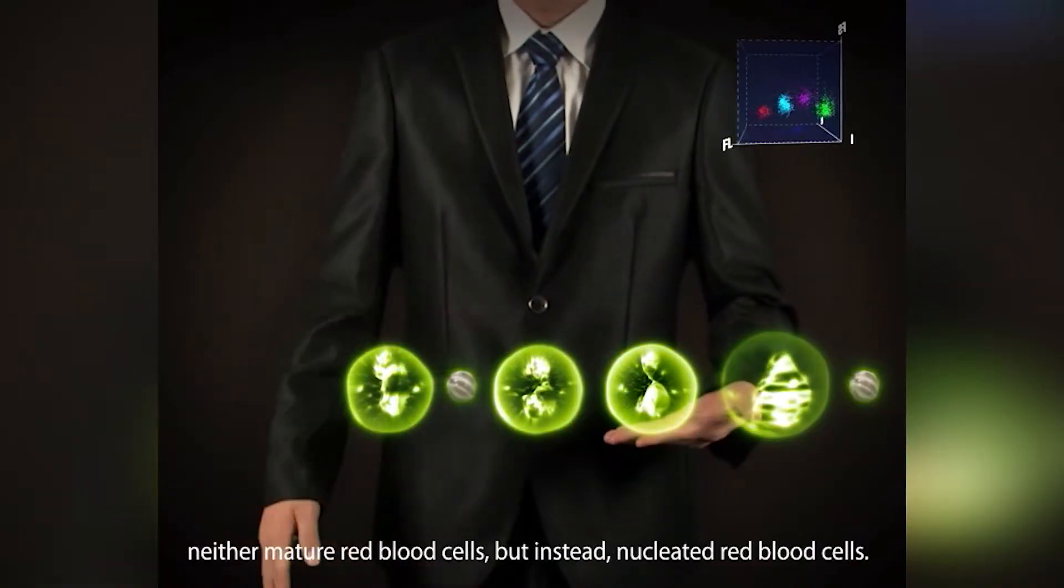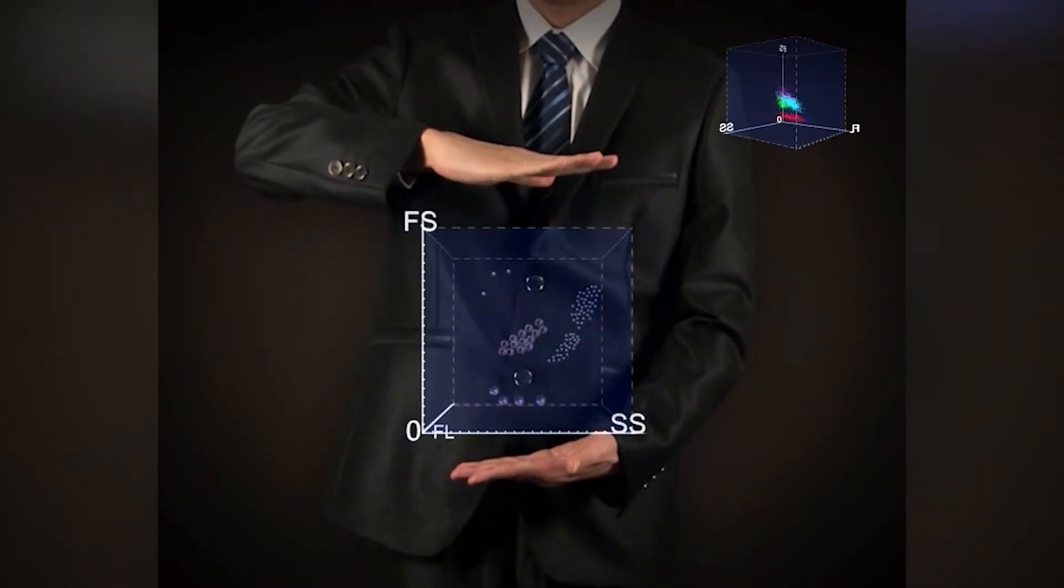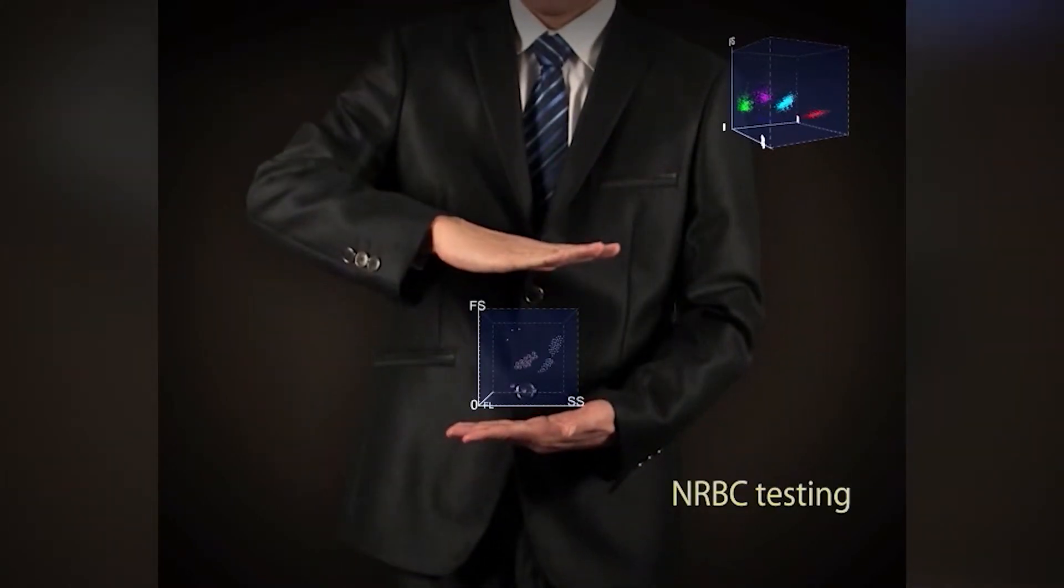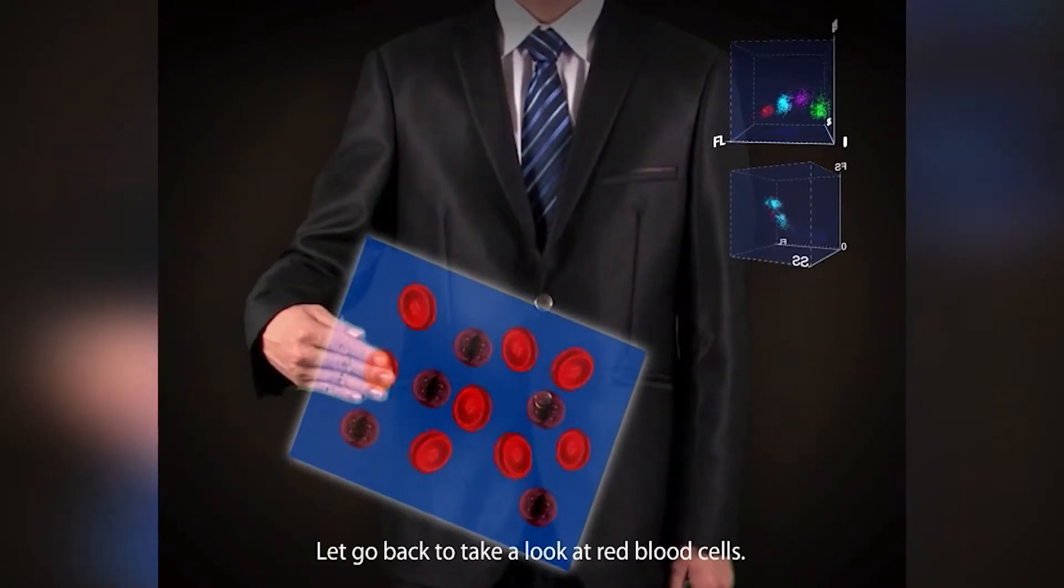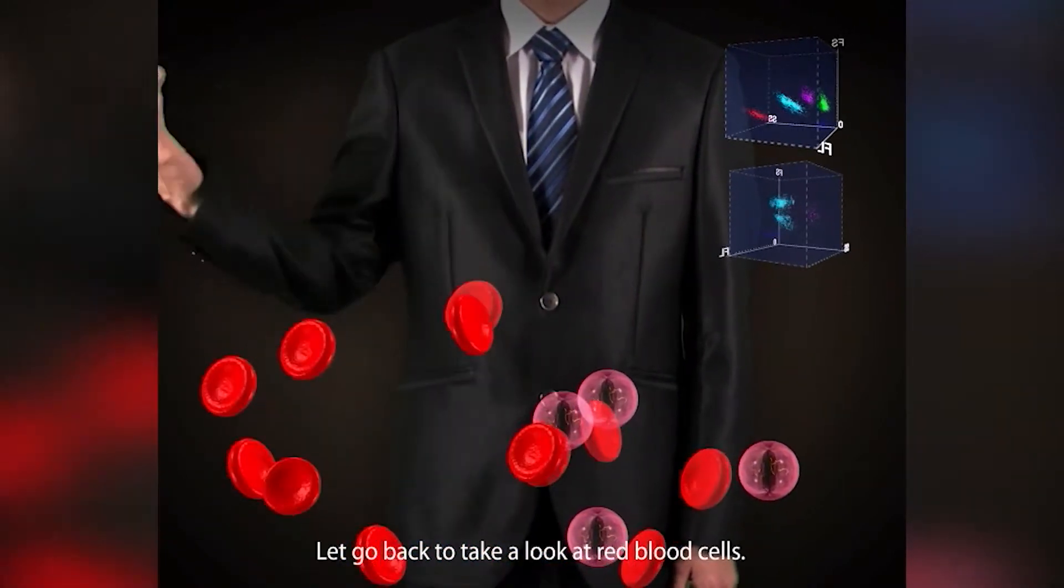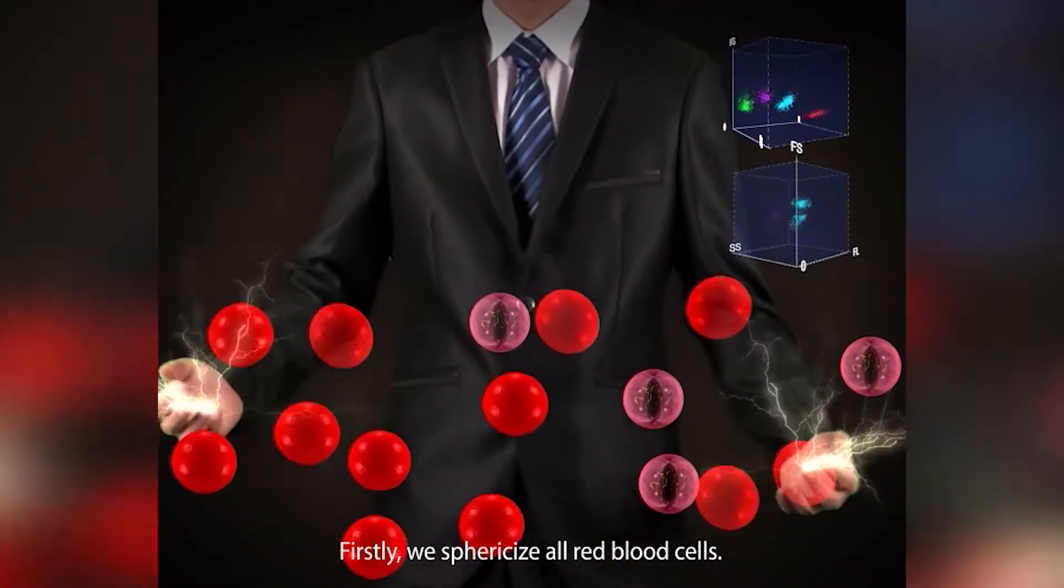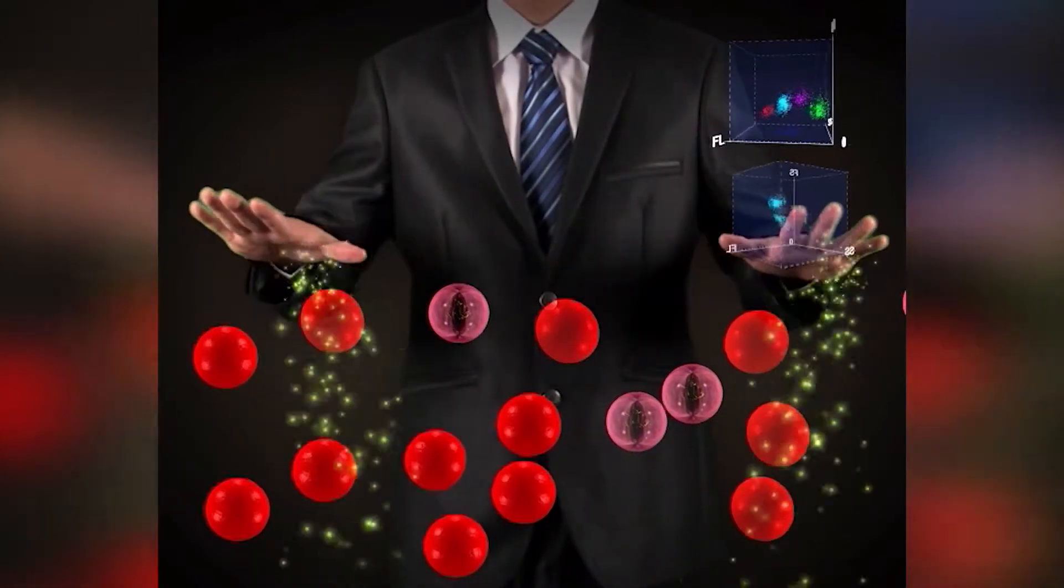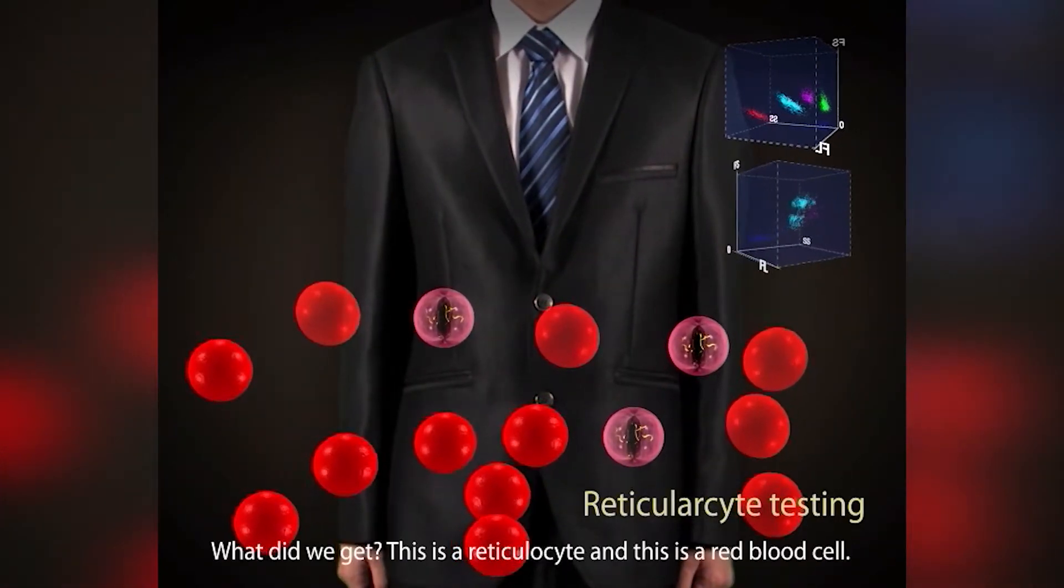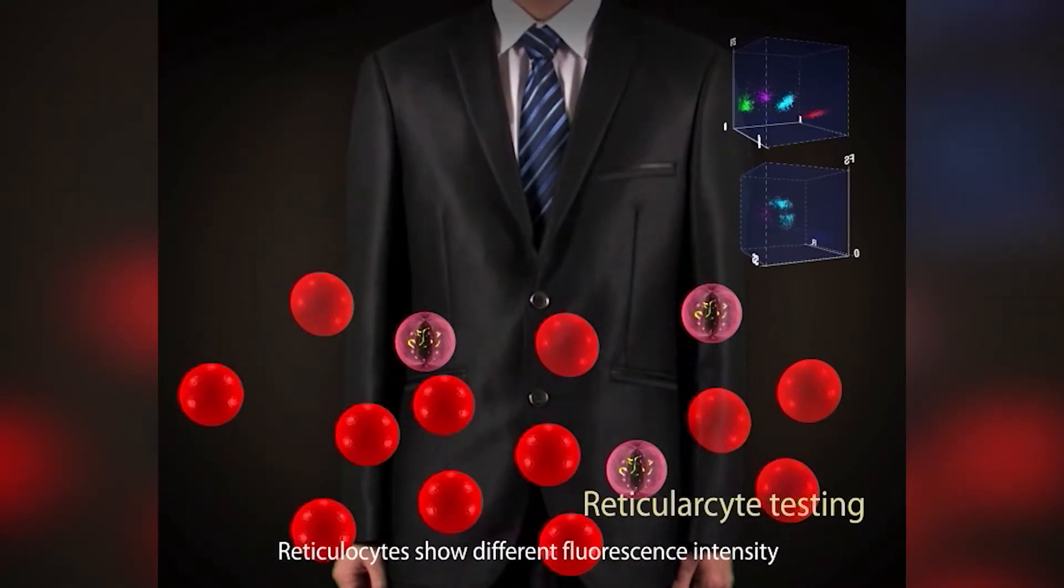Let's go back and take a look at red blood cells. Firstly, we sphericize all red blood cells. What did we get? This is a reticulocyte and this is a red blood cell. Reticulocytes show different fluorescent intensity according to their maturity because they contain different amounts of nucleic acids.